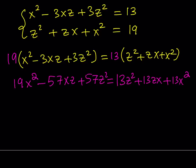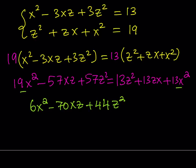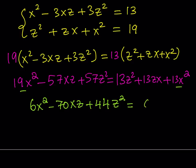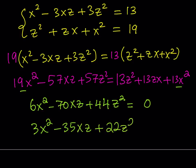Putting everything on the same side: 19x squared minus 13x squared gives 6x squared; negative 57 minus 13 gives minus 70xz; and 57z squared minus 13z squared gives positive 44z squared — all equal to 0. Dividing by 2 to simplify: 3x squared minus 35xz plus 22z squared equals 0. These types of equations, when they're homogeneous — meaning you have 0 on the right-hand side — you can turn them into a nice quadratic.